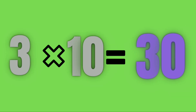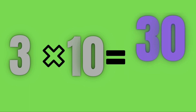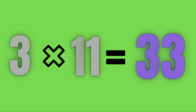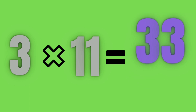Three tens are thirty. Three elevens are thirty-three.